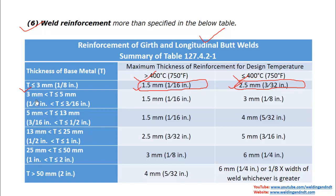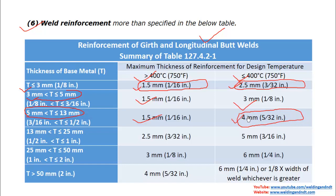Continuing the reinforcement table: for parent metal thickness >5 mm and ≤13 mm, maximum reinforcement is 1.5 mm for temperatures greater than 400°C and 4 mm for temperatures ≤400°C. For thickness >13 mm and ≤25 mm, the limits are 2.5 mm and 5 mm respectively. For thickness >25 mm and ≤50 mm, the limits are 3 mm and 6 mm respectively.